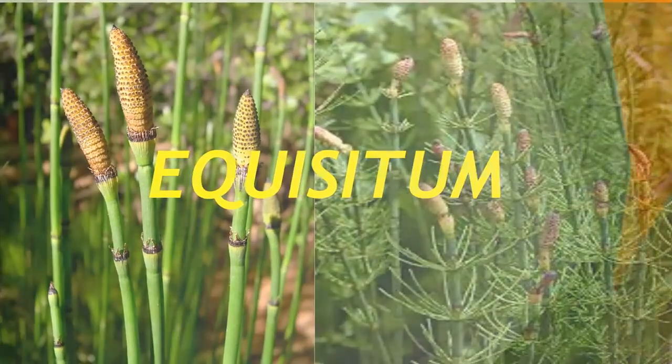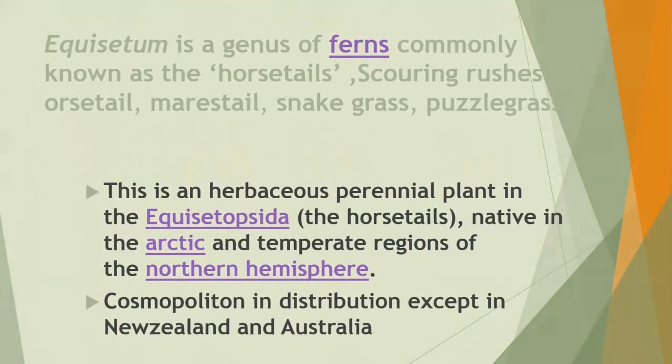You all know that Equisetum is a fern genus, commonly known as Horsetail, Scouring grasses, Marestail, Snakes grass, or Puzzle grass. This plant is herbaceous and perennial, under the division Equisetophyta, and they are mainly native to Arctic and temperate regions of the Northern Hemisphere. But they have a cosmopolitan distribution except in New Zealand and Australia.